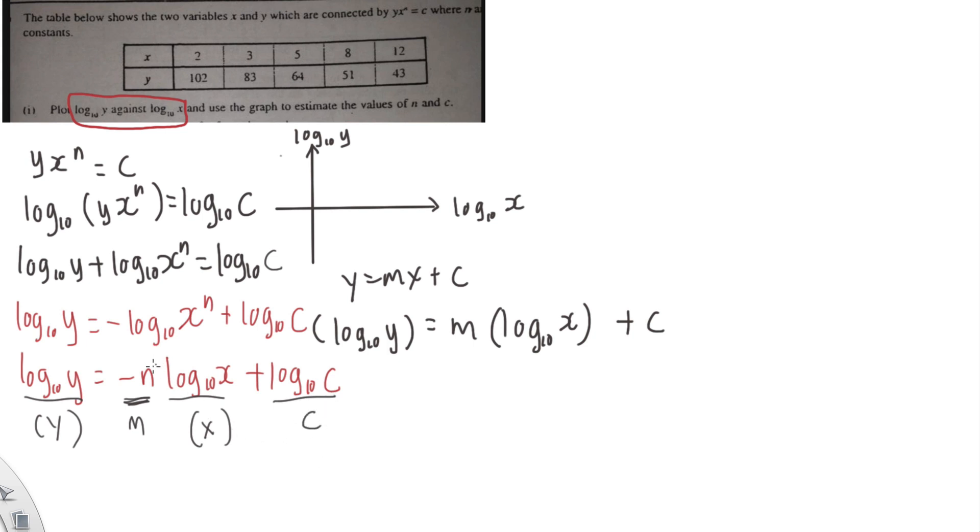So therefore, later if the question asks you to estimate n and c. So that means from your graph, if you got the straight line something like this, you just find the gradient of the straight line, it goes to negative n. Because negative n is the gradient, it's the m.